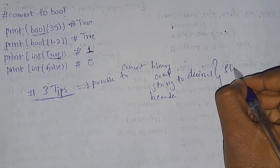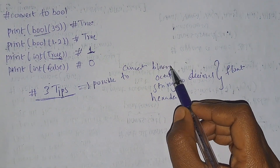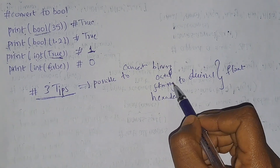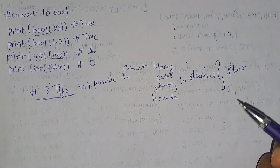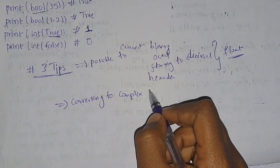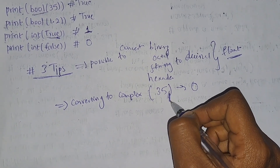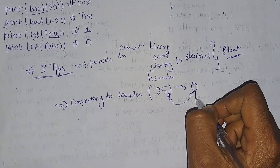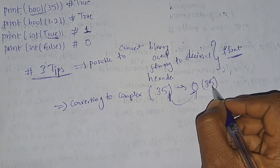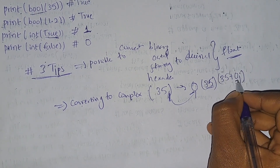But you cannot do this for float. To repeat: it is possible to convert a binary number string, octal number string, or hexadecimal string to a decimal integer, but it cannot be done for float. Tip two: while converting to complex, if you have only one argument, the imaginary part will be considered as zero by default — as we saw when we passed only 35 and got 35+0j.